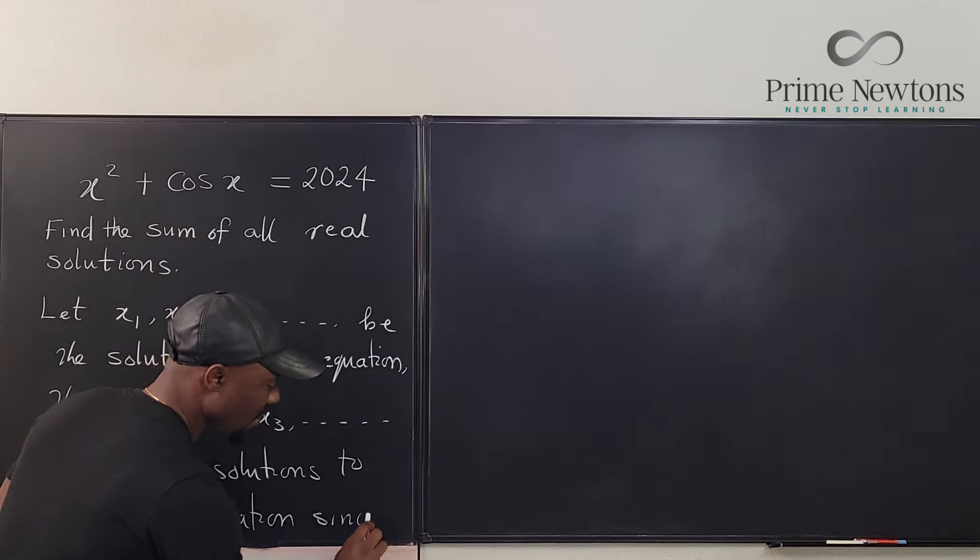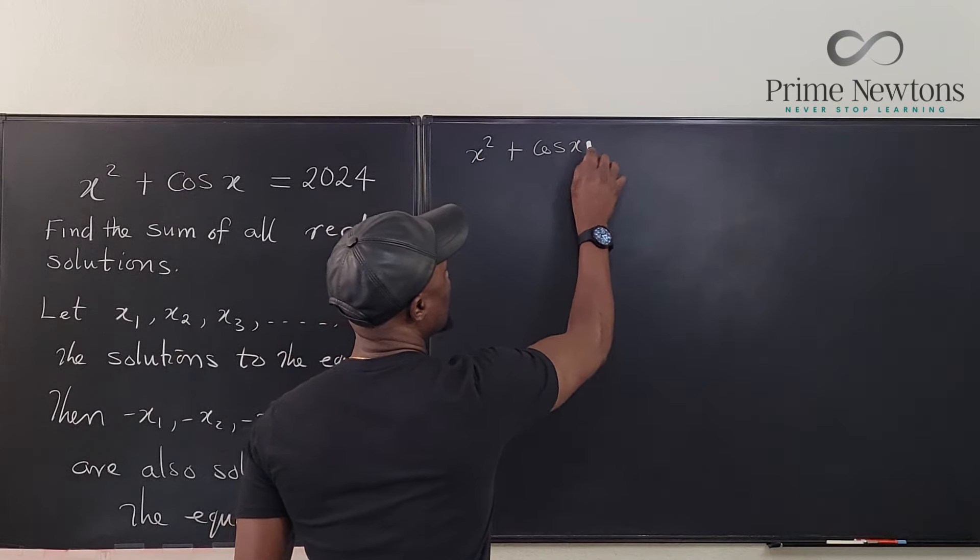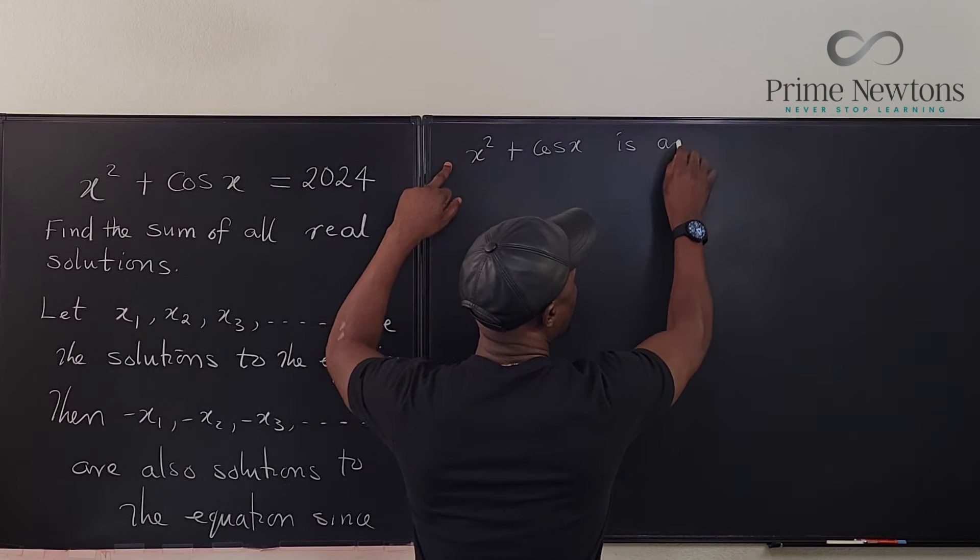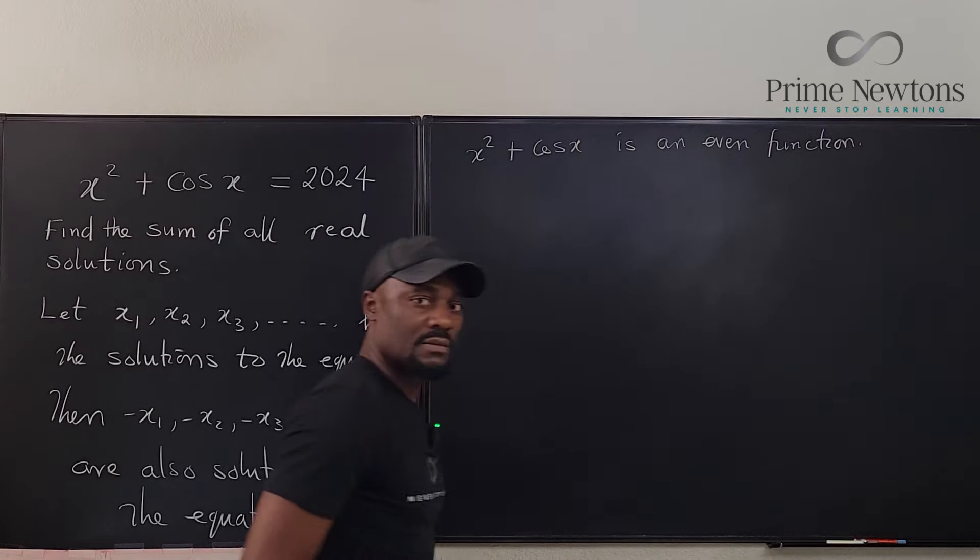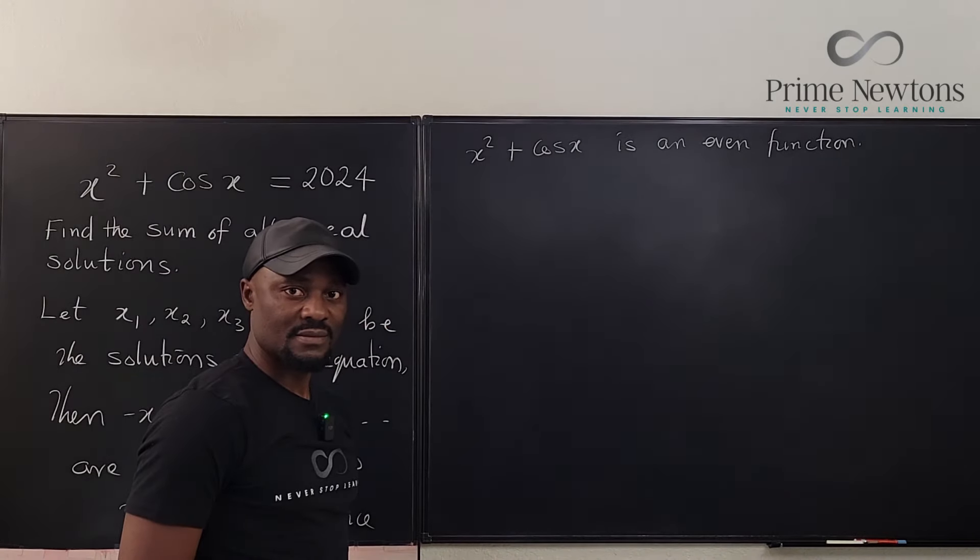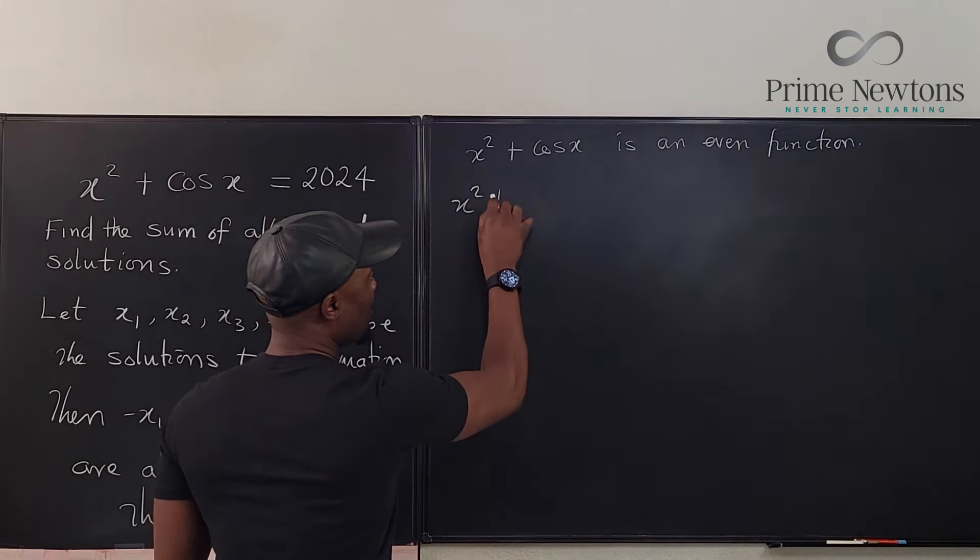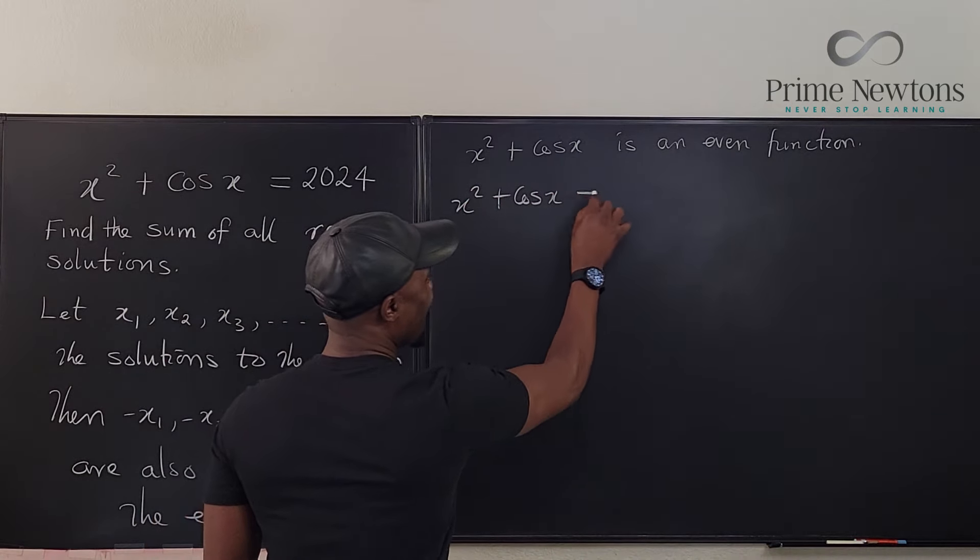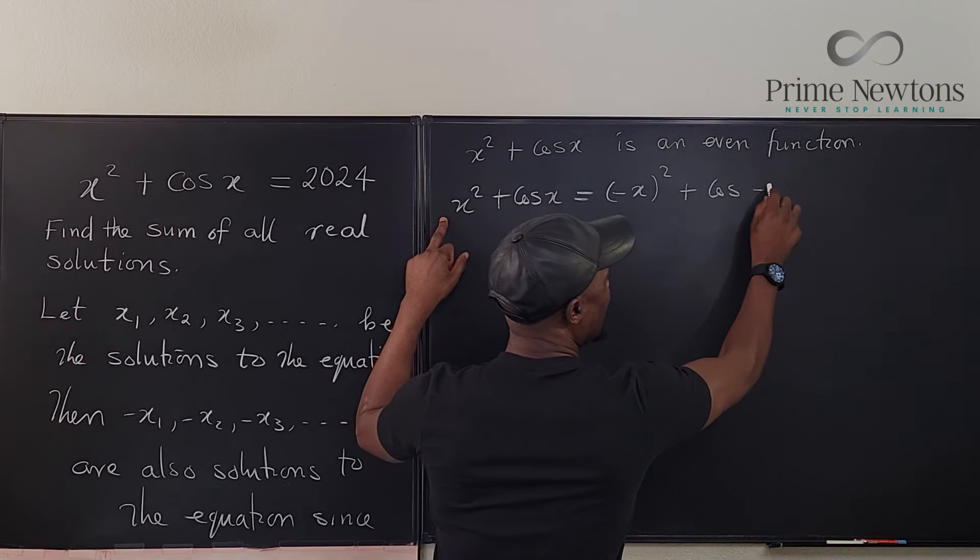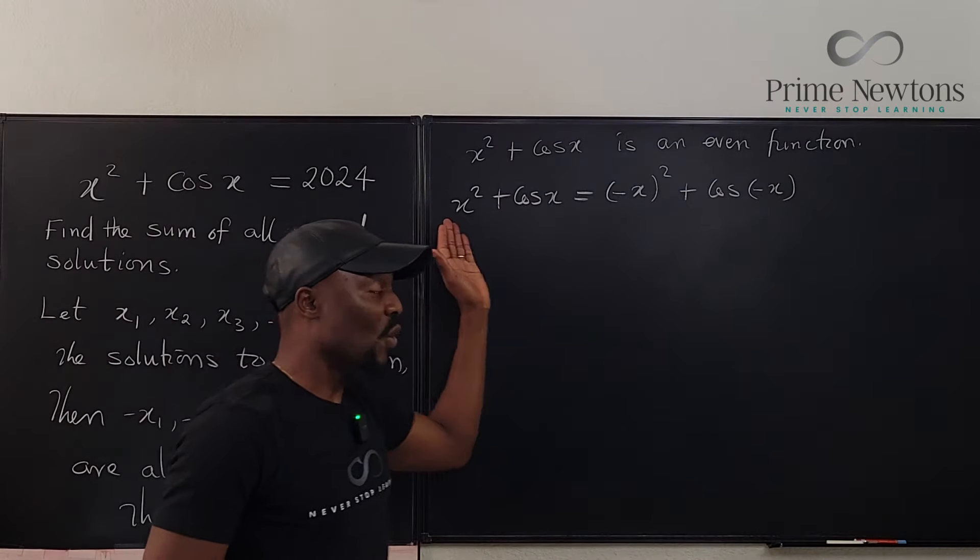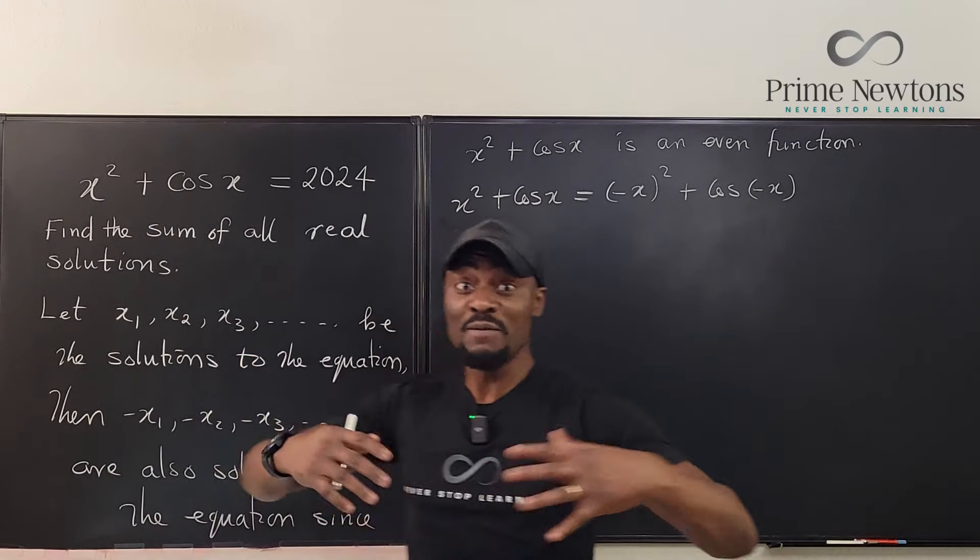Since x squared plus cosine x is an even function, that's obvious. This is an even function because x squared plus cosine of x is the same thing as minus x squared plus cosine of minus x.